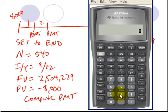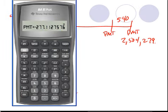And let's see, the future value is 2,504,279. And the present value is 8,000. Hit the plus minus button because we need that to be negative. And so now we have compute payment. And the payment is 277.11. So that's how much you have to save.